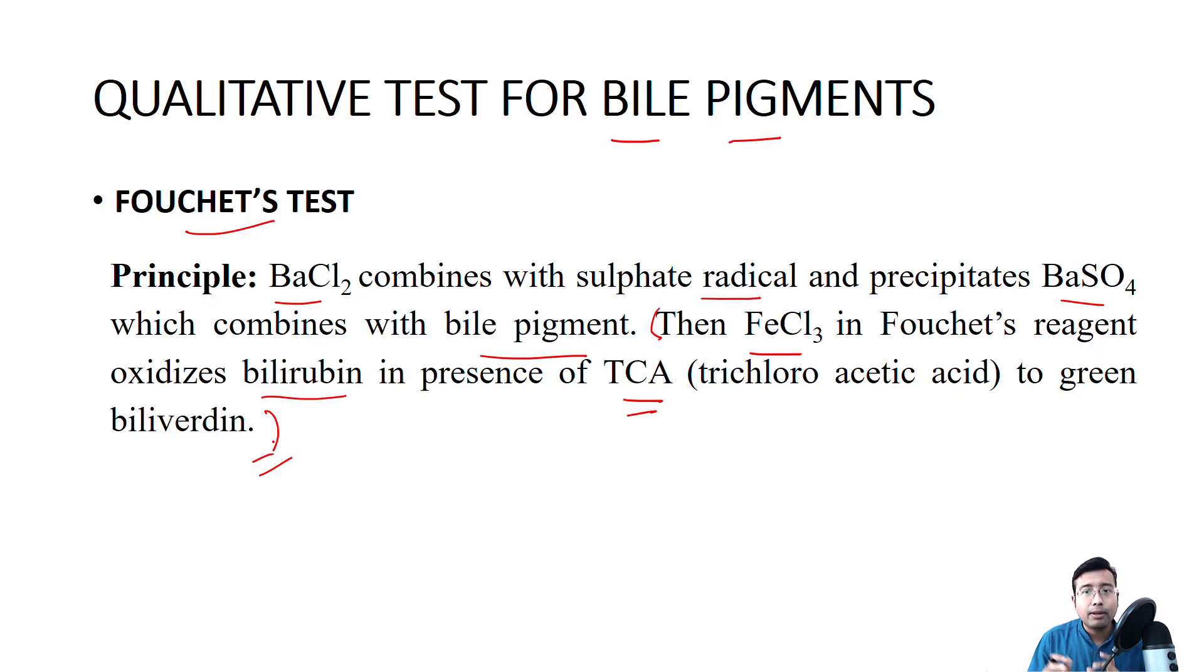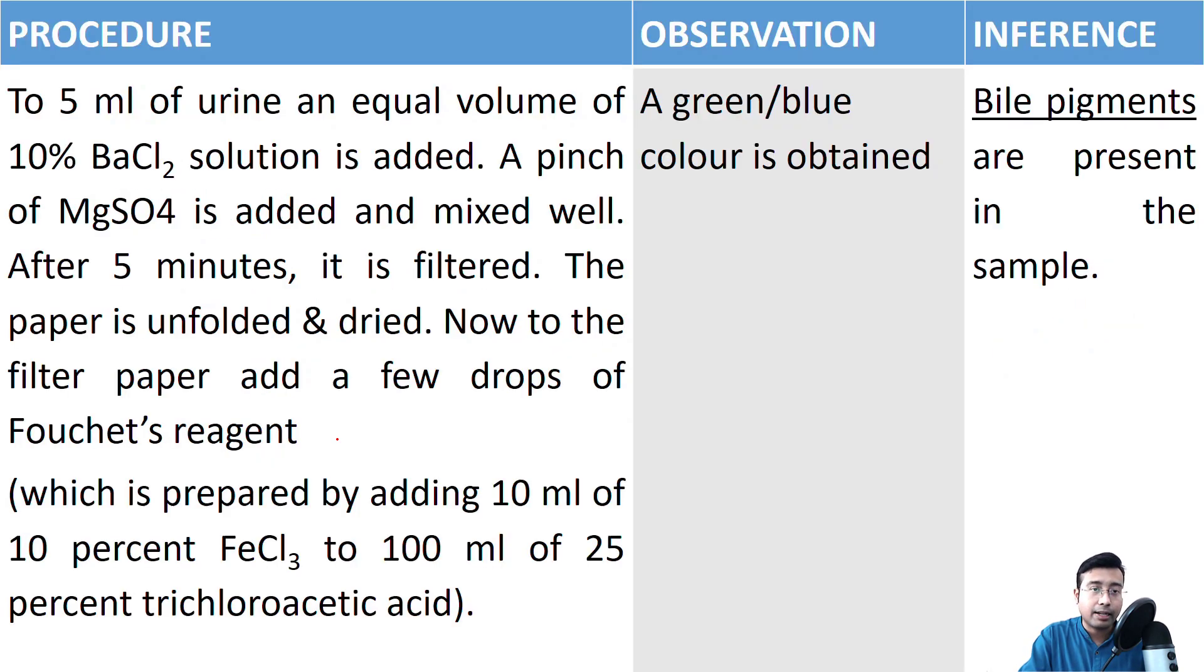Thereafter, ferric chloride in Fouchet's reagent oxidizes bilirubin in presence of trichloroacetic acid to green biliverdin. Everything in the second sentence is actually present in Fouchet's reagent. So in urine sample, we got bile pigment. We add magnesium sulphate and barium chloride separately. So everything that is mentioned in the principle will be added separately in the reaction.